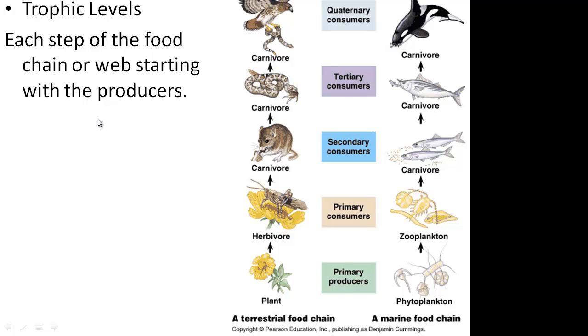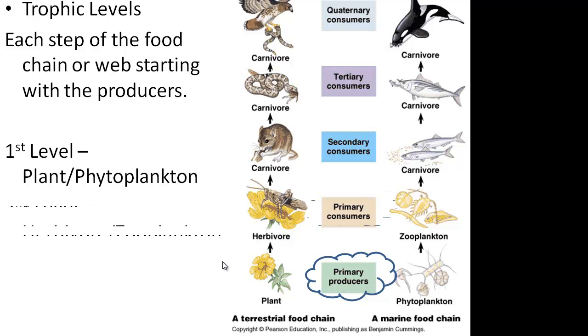Each step of the food chain or food web starts with the producers. Each of our different levels are called trophic levels. Our first level will be our producers. In this example, there are plants or the phytoplankton. They have to do the photosynthesis. Then our second level, we have our herbivores or our zooplankton. They eat only the plants.